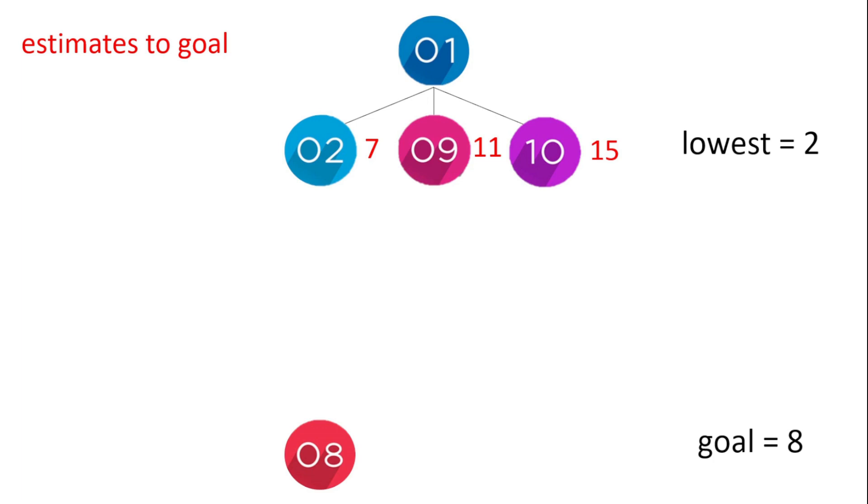The estimated distance to that goal are 7, 11, and 15 from the three nodes of 2, 9, and 10. So the lowest, node 2, has a distance of 7 as an estimate.